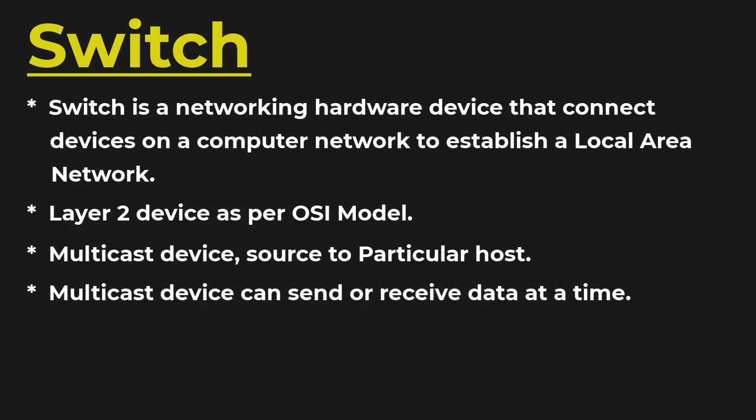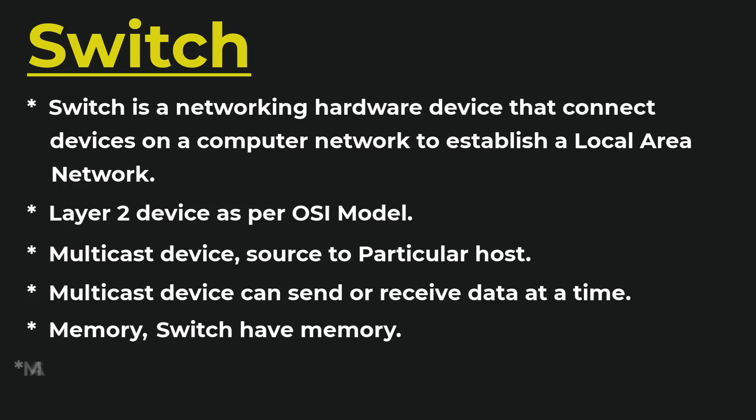The main difference between a hub and a switch is memory. A hub has no memory and does not store any device information. A switch, on the other hand, has memory where it builds a MAC address table, storing each device's MAC address along with the switch port number, and uses that to transfer data.